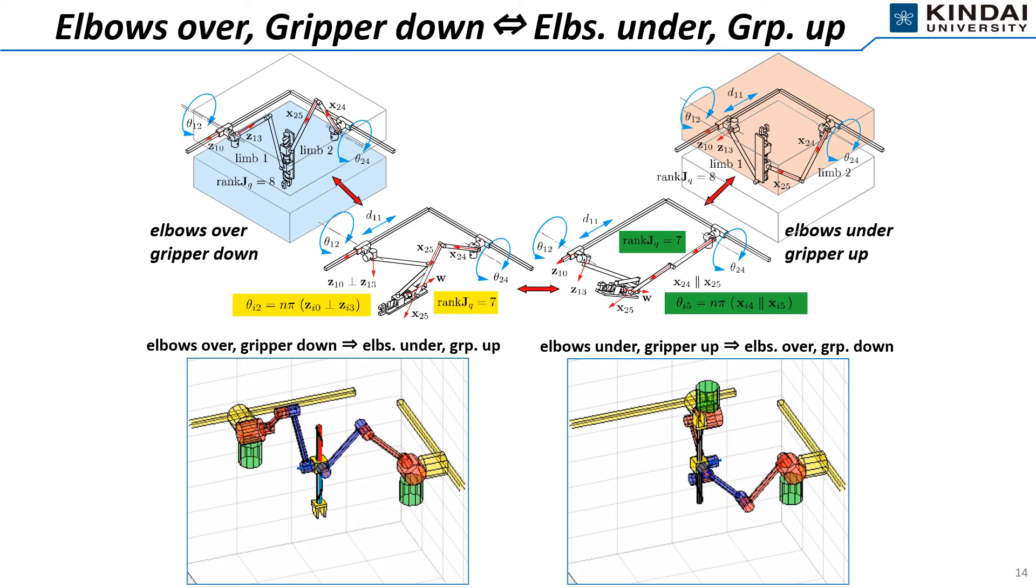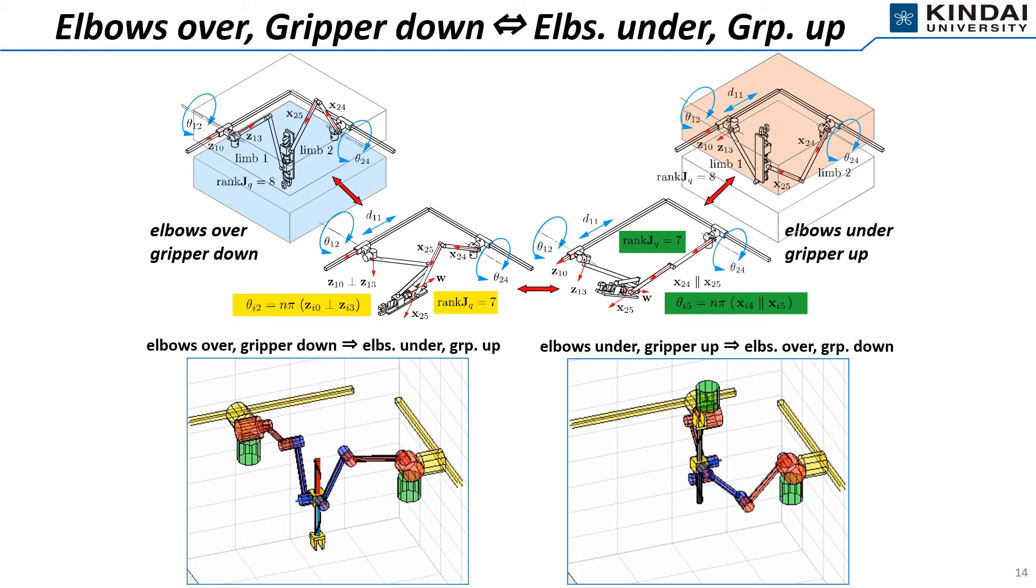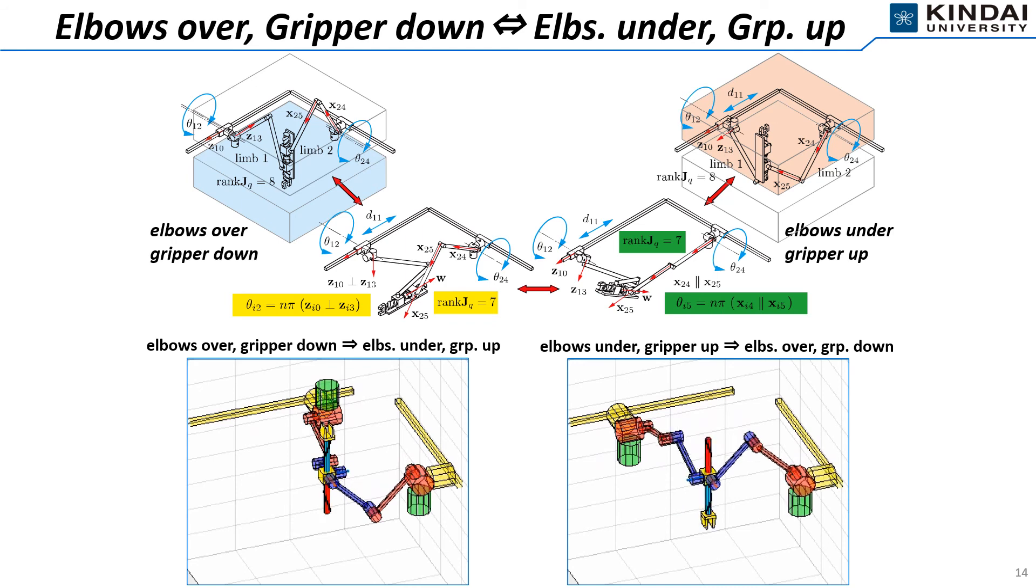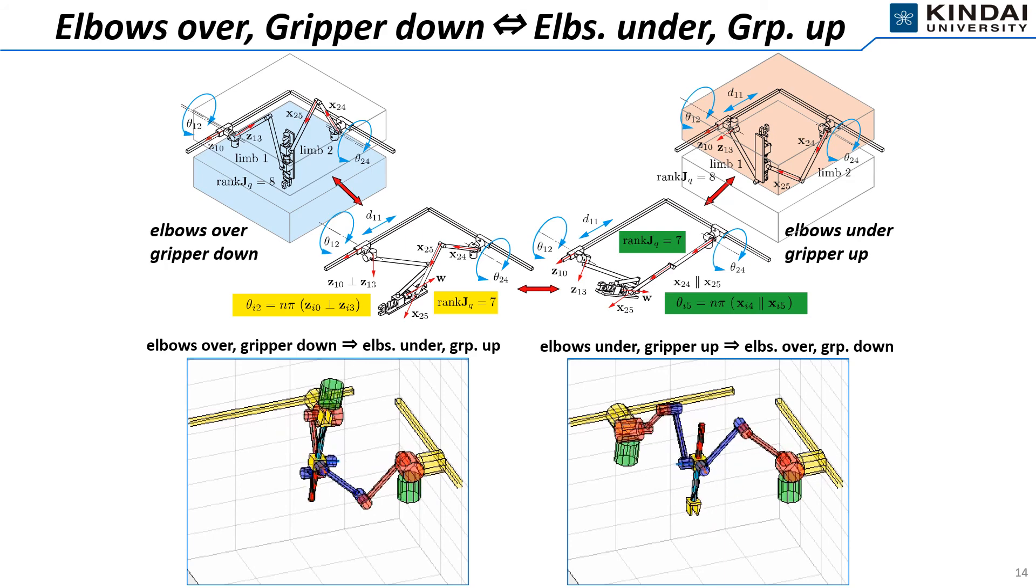By the combination of the singularity-free working mode changes, Atarigi switches between the top-left posture of the elbows over and the gripper down, and the top-right posture of the elbows under and the gripper up. The bottom-left animation represents the posture switch from the elbows over and the gripper down, to the elbows under and the gripper up. The bottom-right animation represents the posture switch from the elbows under and the gripper up to the elbows over and the gripper down. You can see the Atarigi expands its operating space both in the bottom and upper areas as shown in the animations.